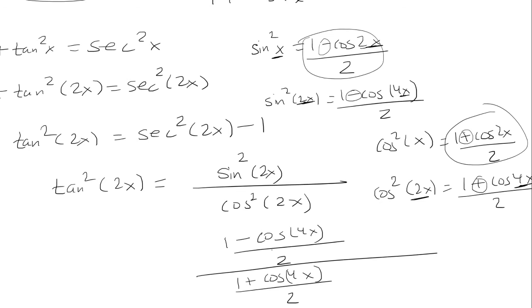We're going to multiply top and bottom by 2, so that's going to cancel out these twos. And so we're left with 1 minus cosine 4x over 1 plus cosine 4x. And this completes the proof.